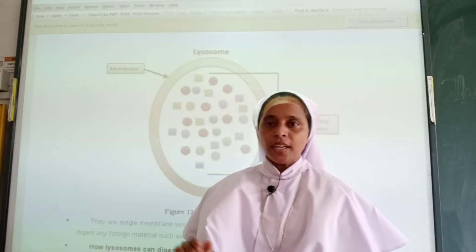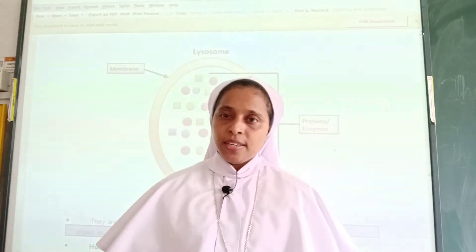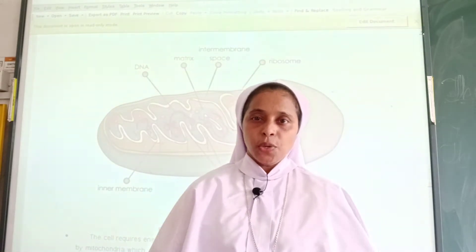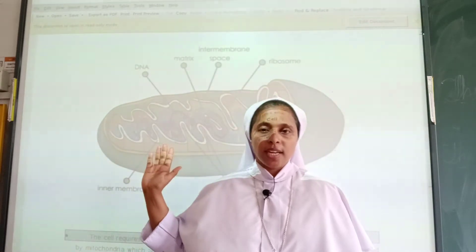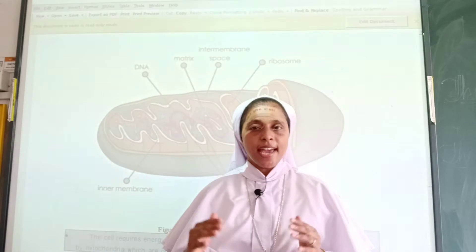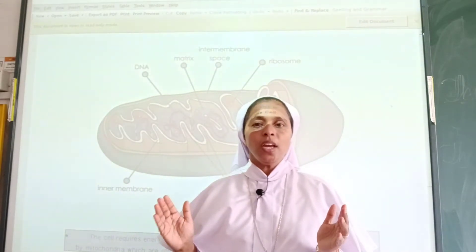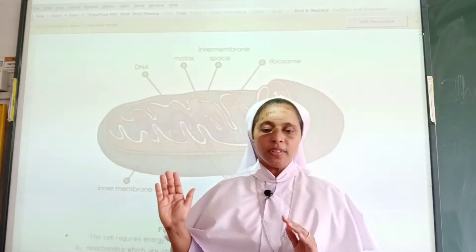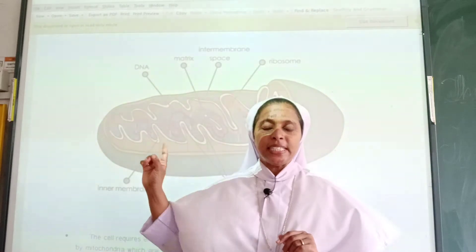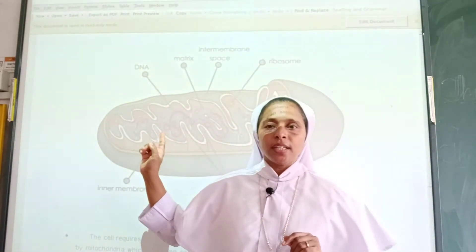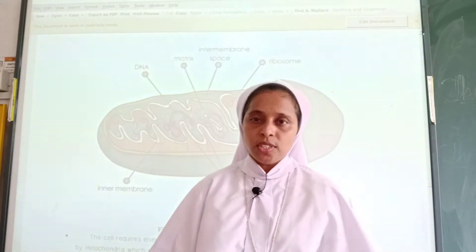Now let us learn about mitochondria — the next cell organelle. You can see here the image of mitochondria. Mitochondria is a double membrane organelle which has its own DNA, and that is why it is often called a semi-autonomous organelle. It has a double membrane and its own DNA, which is why it is termed a semi-autonomous organelle.